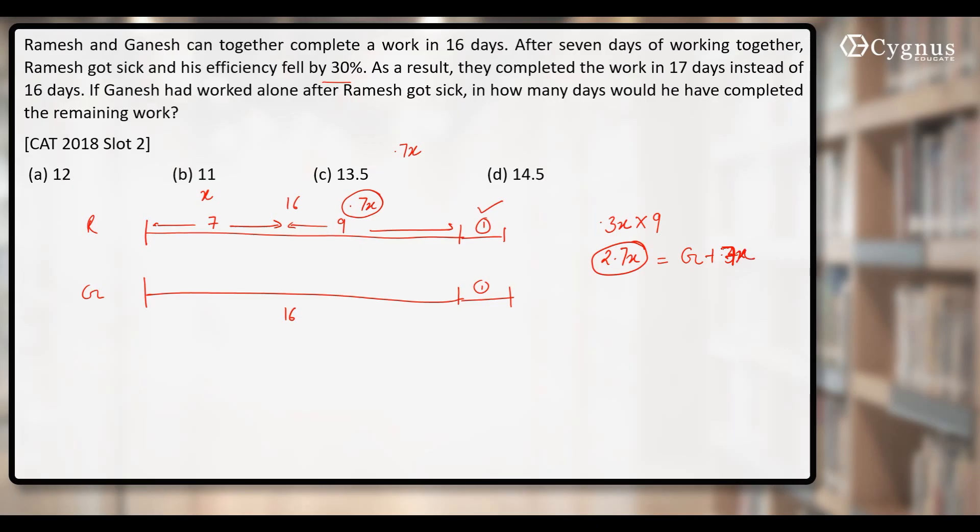He'll work at reduced efficiency. That means he'll do 0.7X units of work for one more day. Can we say this much work was compensated by Ramesh and Ganesh together? Let's say Ganesh can do G units per day. And Ramesh will do 0.7X units per day. This shows that Ganesh is equal to 2.7X minus 0.7X. That means Ganesh one day's work will become 2X.